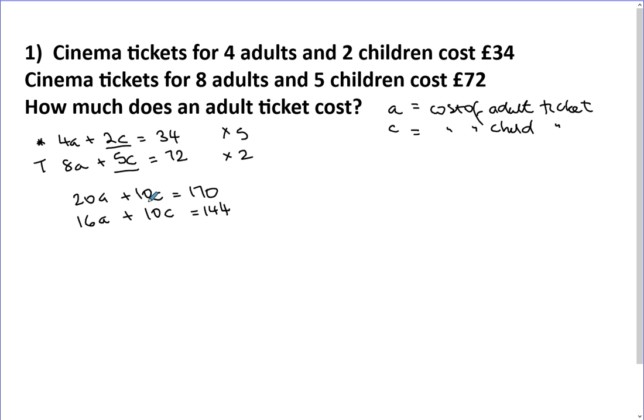Because the signs are the same here, we minus and we're ready to play. So 20 minus 16 is 4A and you're gone. And 170 minus 144 is 26. And then we divide by 4 and you get A equals 26 divided by 4, which is £6.50.